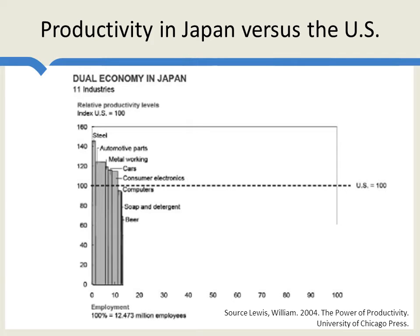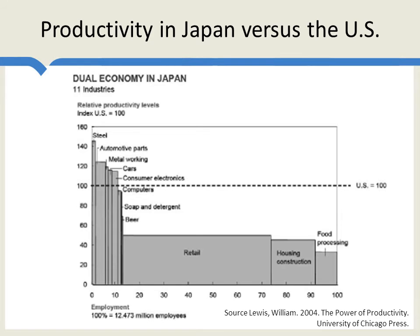But these high-productivity industries accounted for just a little bit over 10% of employment in Japan. So although we think of them as representing Japan Inc., these industries are actually pretty small relative to the whole Japanese economy. What does the rest of the Japanese economy look like? The retail sector is huge — about 50% of the entire Japanese economy — and its productivity level is half that of the United States. Housing and construction, another huge industry, has a much lower productivity level than in the U.S. Food processing has about 30% productivity level compared to the United States, and has about as large an employment effect as steel, automotive parts, metalworking, cars, and consumer electronics all combined.